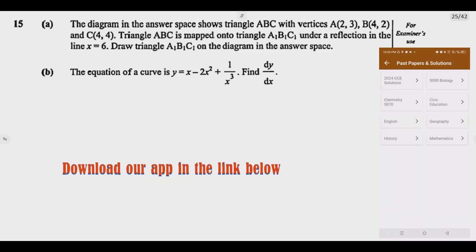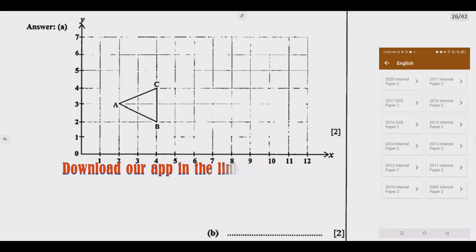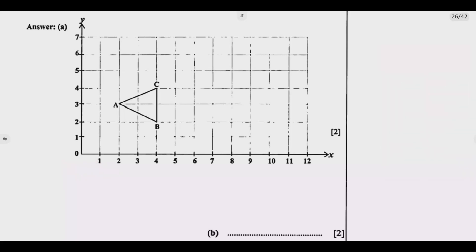If you look at the diagram on the answer space, this is the diagram. You can see point A here, point B here, point C here. So these are the points.